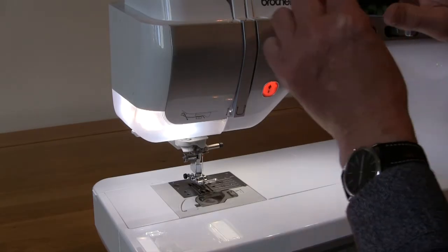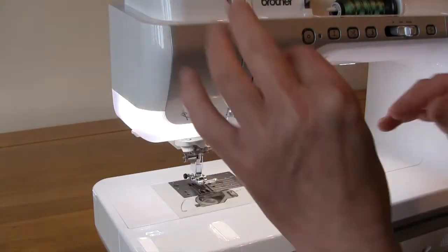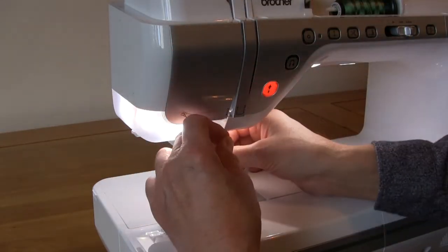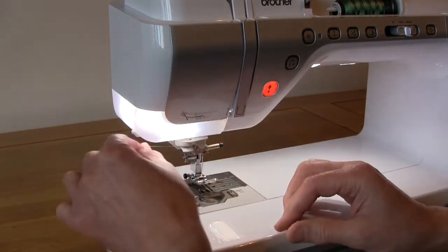A quick way to test is to thread your machine in the normal way with the presser foot in the up position, which opens the tension disc and allows the thread to go in there, and whichever way your machine is threaded, just thread it up.